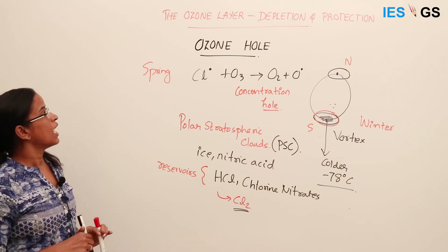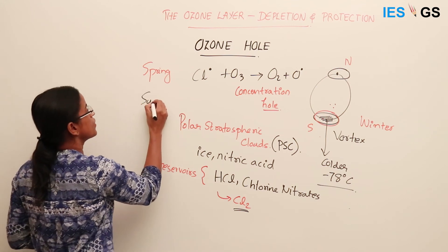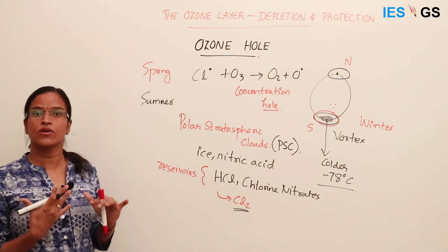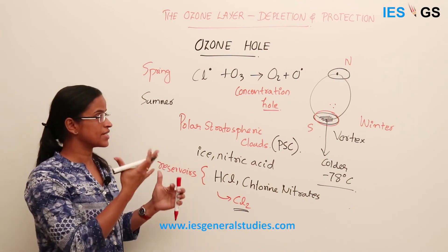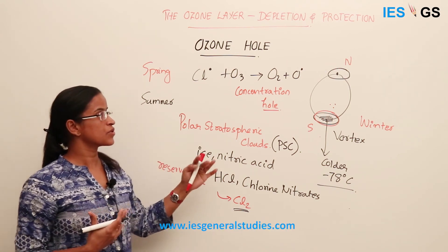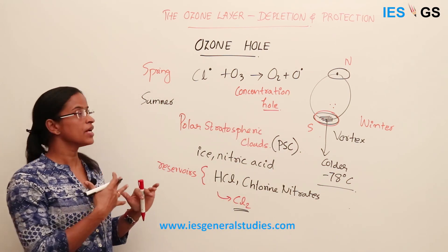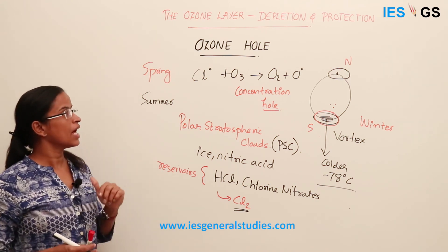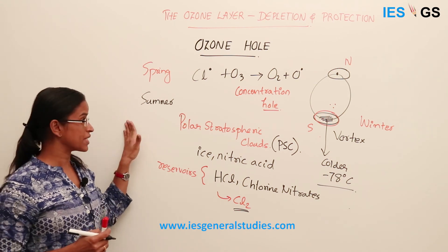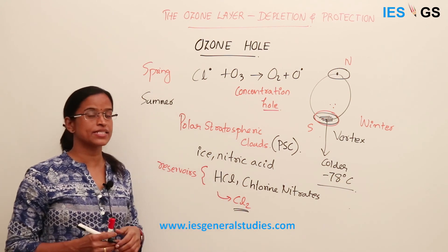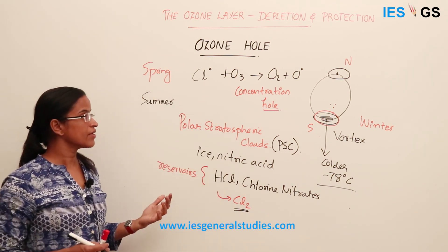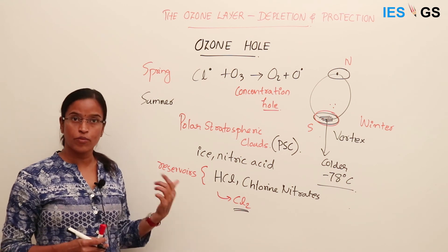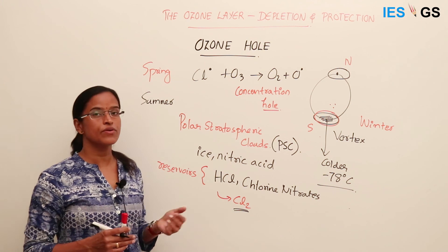This continues through spring until summer, when sunlight disperses the polar stratospheric clouds and ozone begins to recover — ozone formation increases and the hole gets patched up during summer. Satellites observed this phenomenon, and it became a major global issue, making us aware of ozone depleting substances causing the ozone hole. From there, efforts started to reduce ozone depleting substances, leading to global protocols like the Montreal Protocol and Vienna Convention to protect our ozone layer.